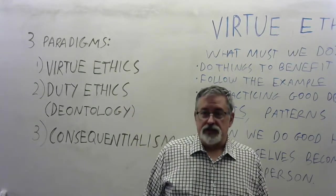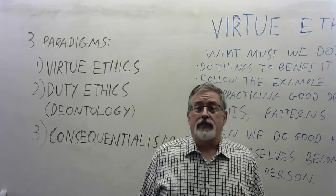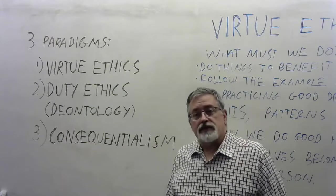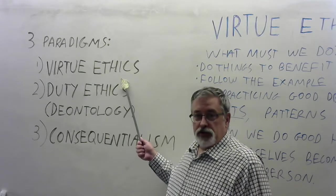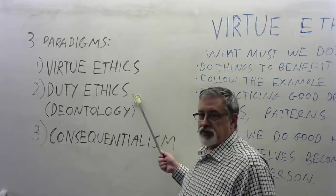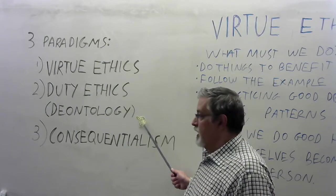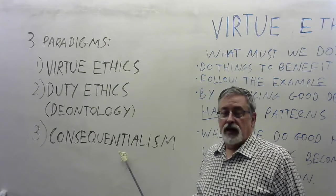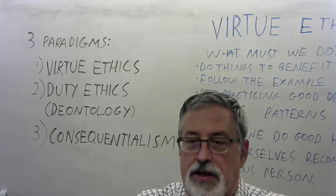Good morning, I'm your philosophy teacher Nick Macaluso, and today I want to talk to you about the three paradigms of ethics. These three paradigms, or ways of thinking about right and wrong, are virtue ethics, which goes back to Aristotle; duty ethics, the most prominent example of which is Immanuel Kant, often known as deontology; and consequentialist ethics, as most famously espoused by John Stuart Mill.